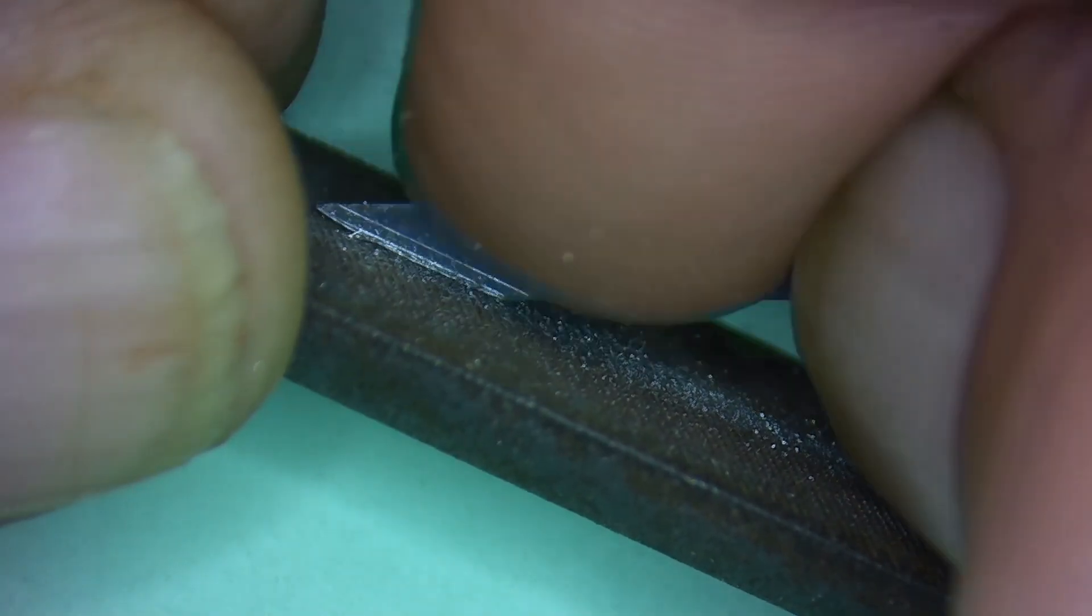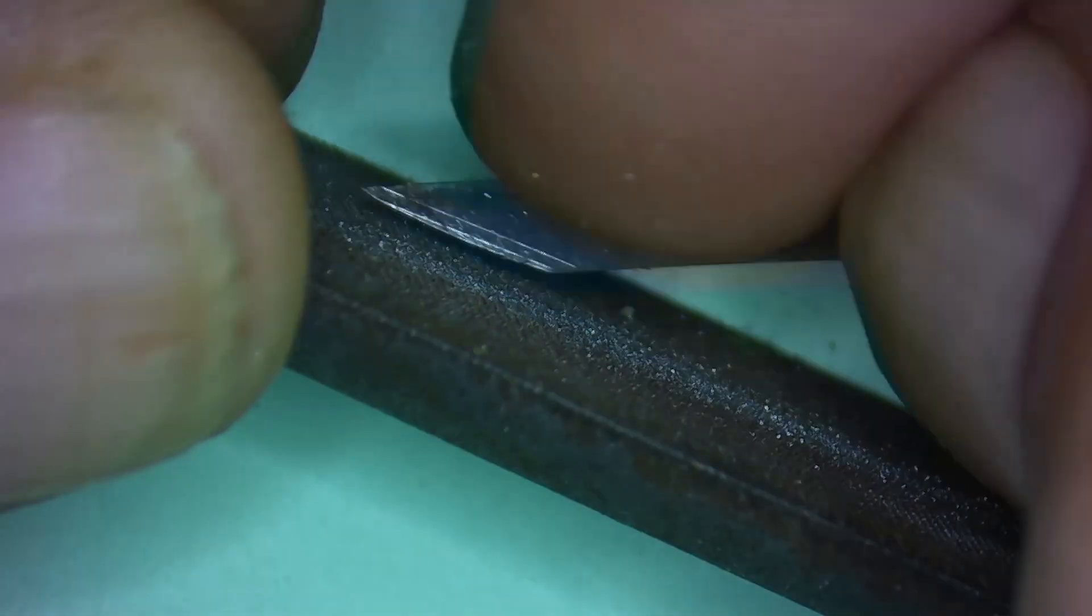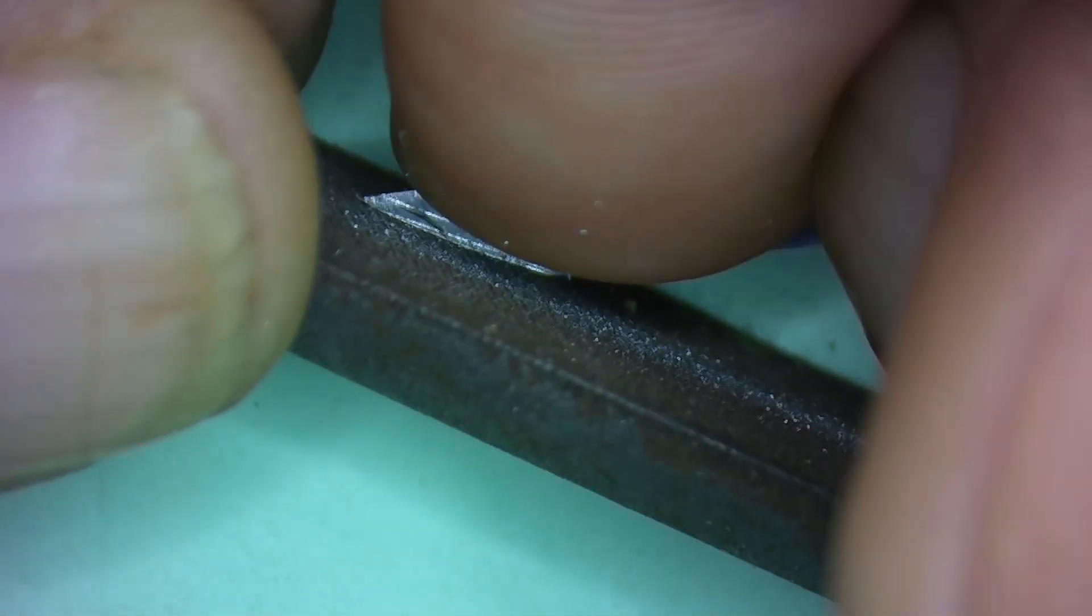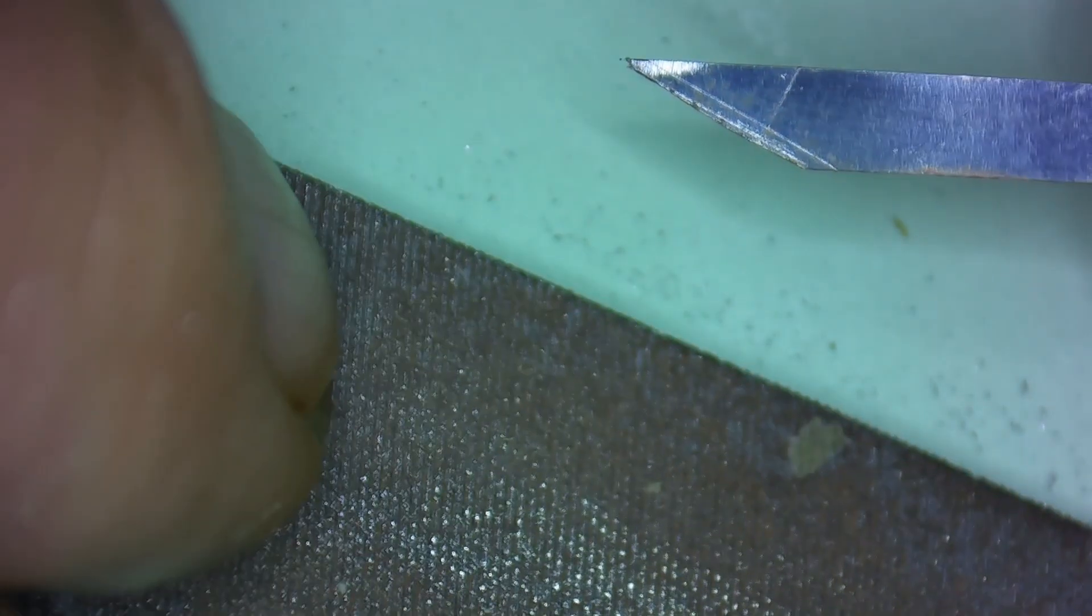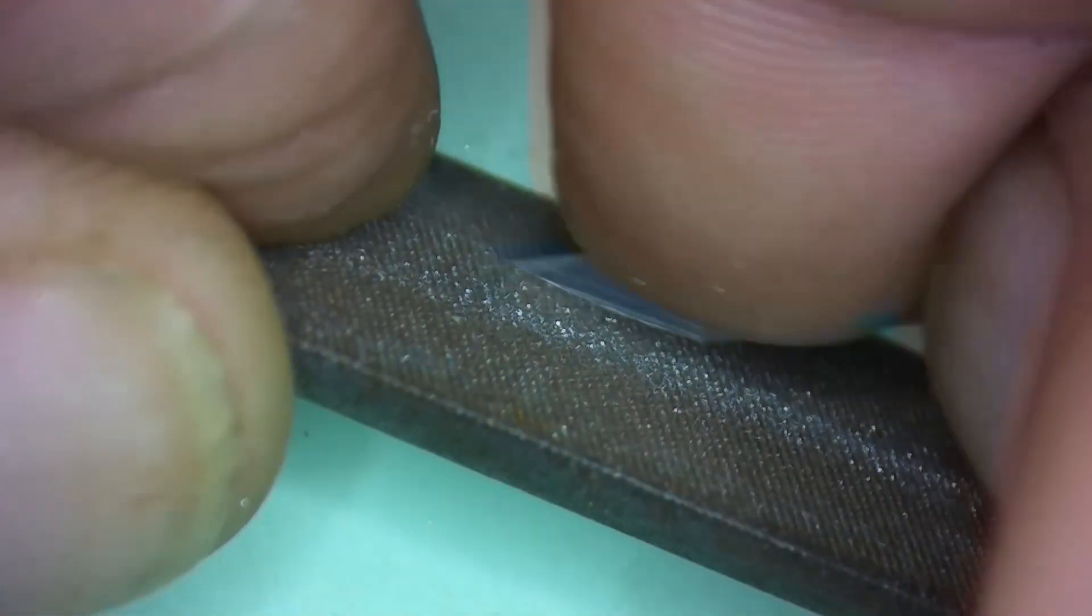Now, looking at it, you can see I still have a little bit of material to remove. So now, I can just do that by hand on the file, getting as close to my mark as possible.